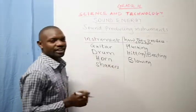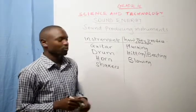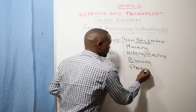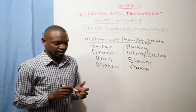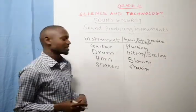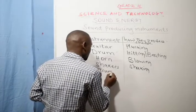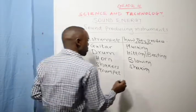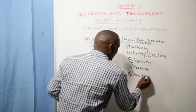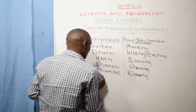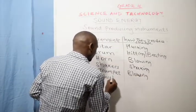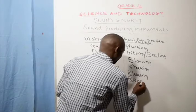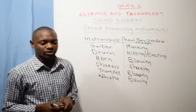We have other things we call shakers. A shaker produces sound through shaking. We also have other musical instruments like the trumpet — a trumpet produces sound through blowing. We also have the whistle, which also produces sound through blowing.